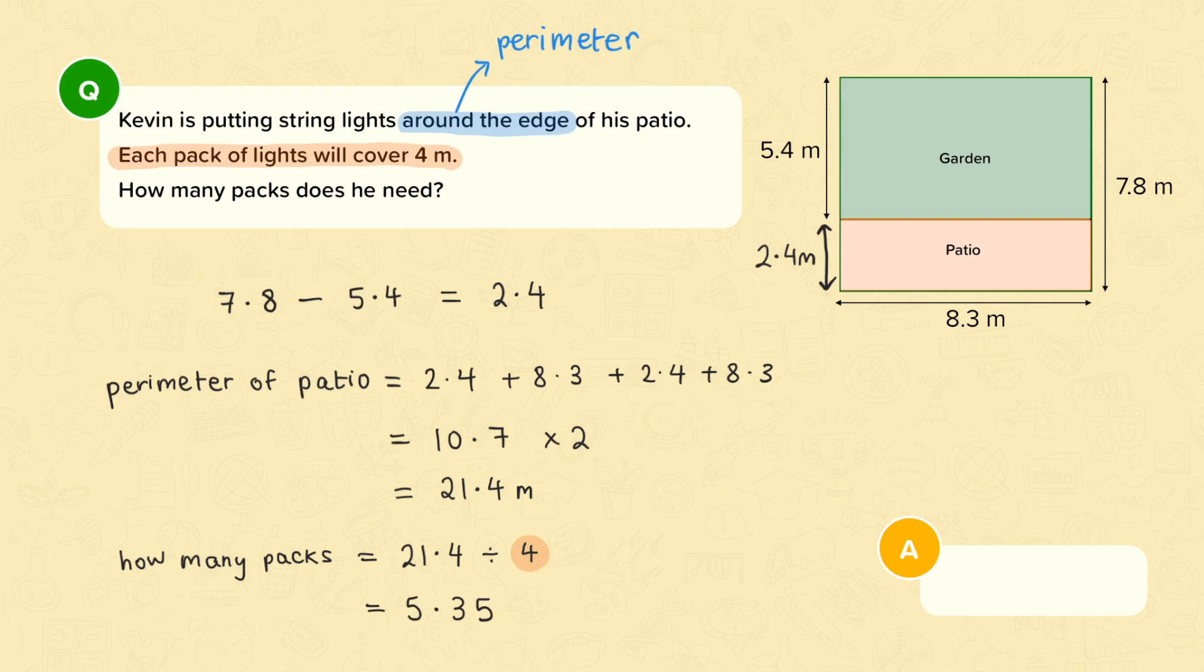But in real life you can't buy 5.35 packs. You can buy 5 packs or 6 packs. Now because 5.35 is more than 5 that means I'll need to round up to the next number of packs. So Kevin needs 6 packs.